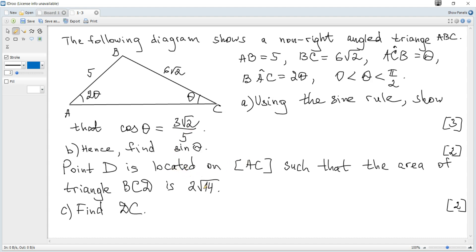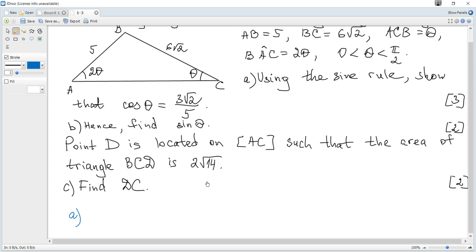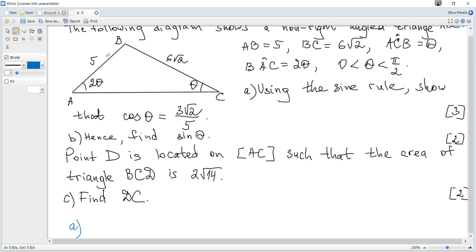The formula for the sine rule is given in the data booklet and it says that there are the same ratios of the length of a side to sine of the opposite angle for any triangle.